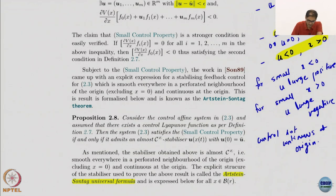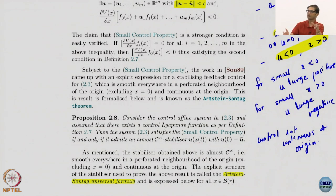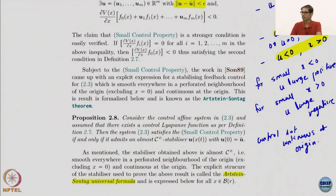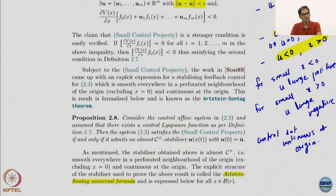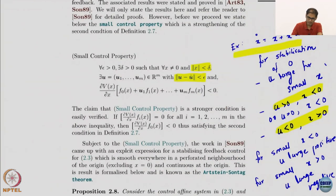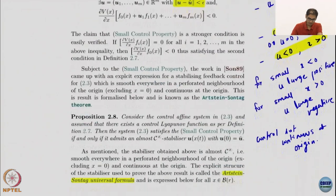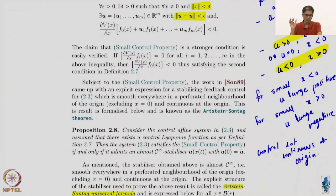It is an if-and-only-if result, which in mathematics means it is very tight - this implies that and that implies this, so the assumptions are the least required to have such a control. It also gives a constructive formula. The fine point is 'almost C-infinity': C-infinity means smooth, and the 'almost' means all the nice properties hold in a perforated neighborhood of the origin - origin not included. All you can get at the origin itself is continuity.